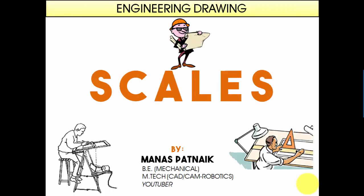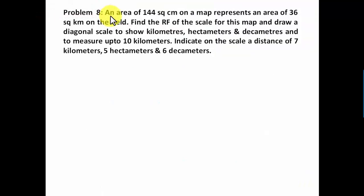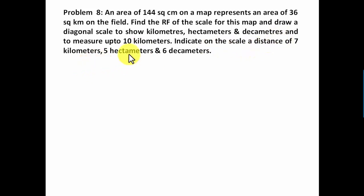Hi there guys, this is your friend and tutor Manas, and today we're going to be continuing with our discussion on diagonal scales. Please subscribe to this channel so that whenever I post a video you'll be updated — it's absolutely free. Let's see if we can have a hundred likes for this video. The problem: an area of 144 square centimeters on a map represents an area of 36 square kilometers on the field. Find the RF of the scale for this map and draw a diagonal scale to show kilometers, hectometers, and decameters, and to measure up to 10 kilometers. Indicate on the scale a distance of 7 km, 5 HM, and 6 decameters.